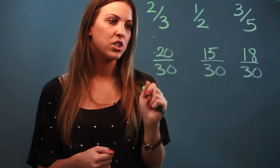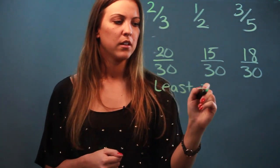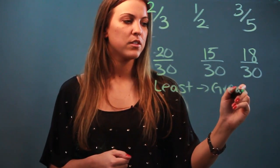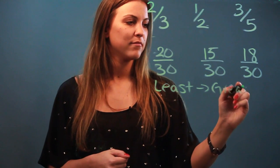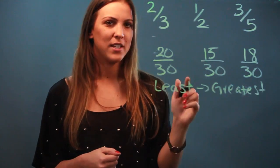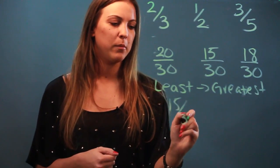So if I want to rearrange it, I'll do from least to greatest. My smallest numerator is 15, so 15 over 30 would be my smallest fraction.